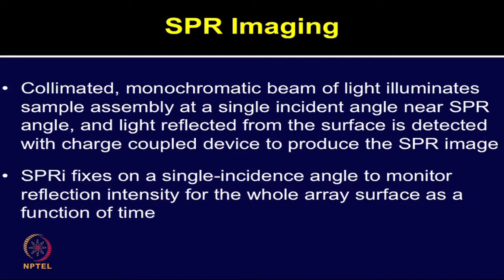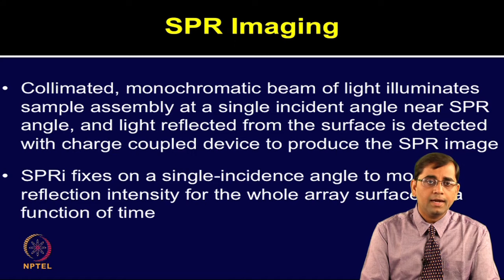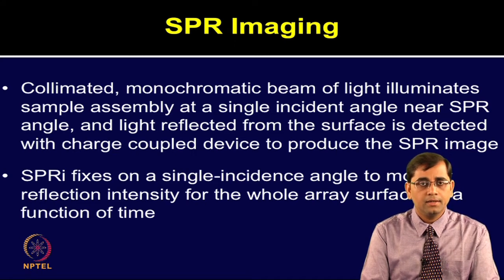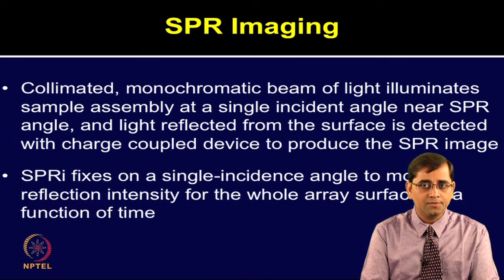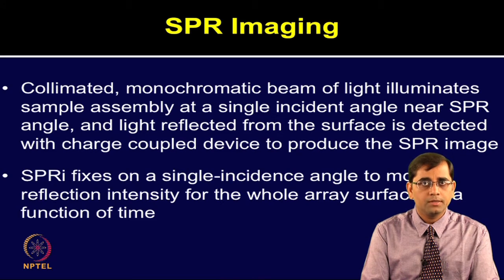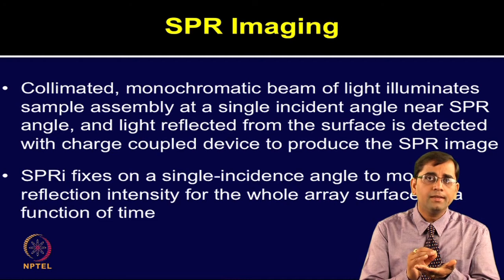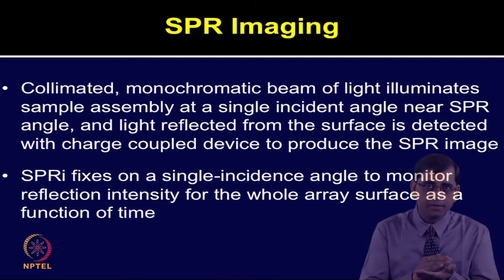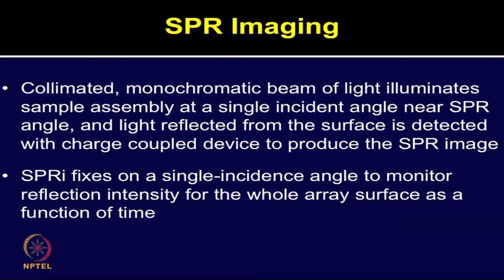The SPRi technique involves a collimated monochromatic beam of light which illuminates the sample assembly at a single incident angle near the SPR angle, and light reflected from the surface is detected with a charge-coupled device to produce the SPR image. SPRi fixes on a single incident angle to monitor the reflection intensity for the whole array surface as a function of time.